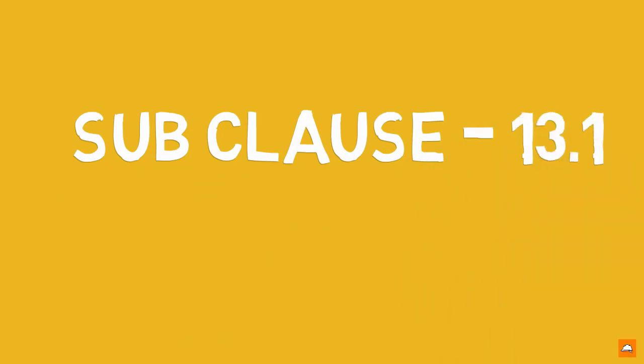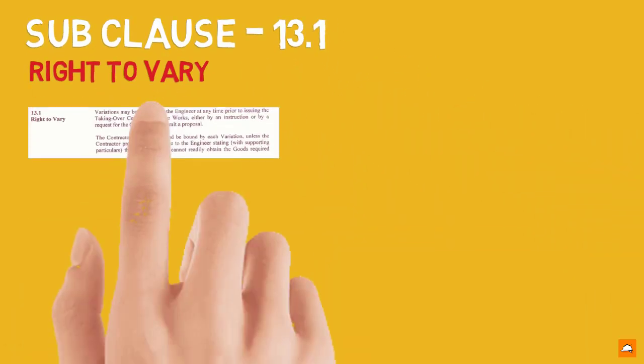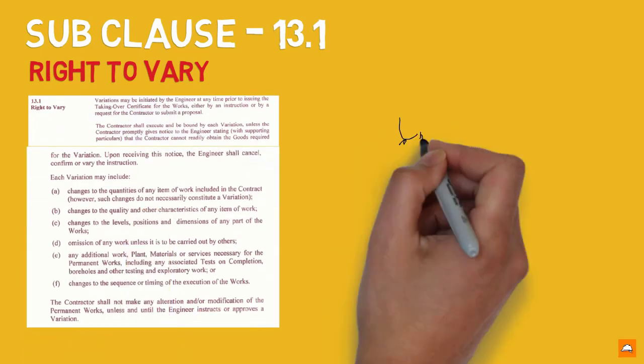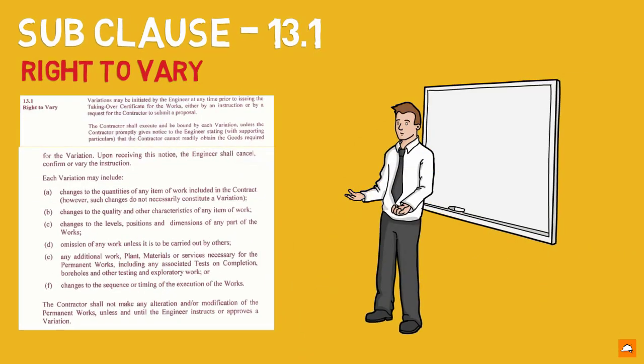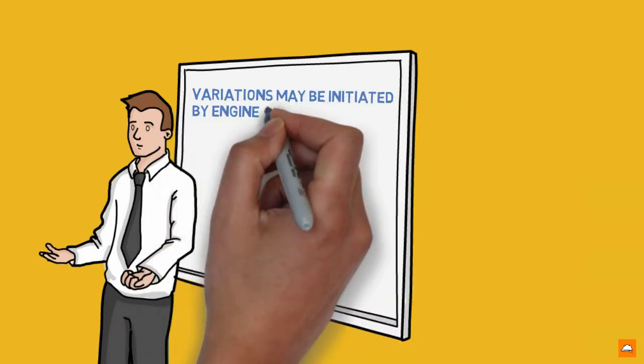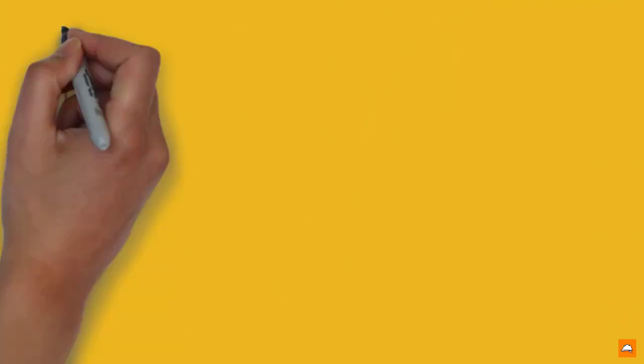This clause comprises of subclauses, subclause 13.1. This is how things look like on the paper. In the first part of this subclause, this says variations may be initiated by engineer at any time prior to taking over.